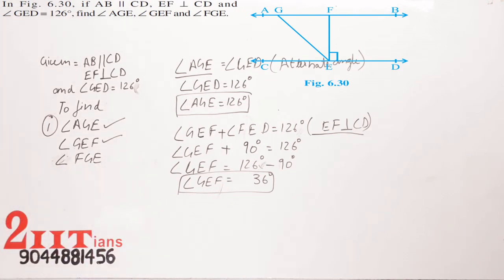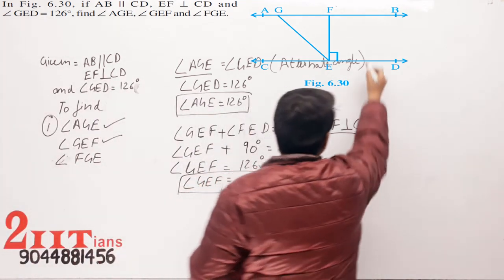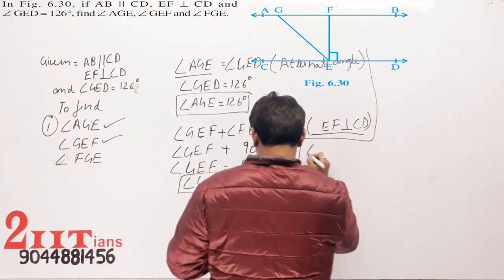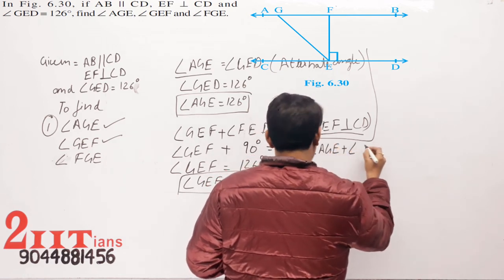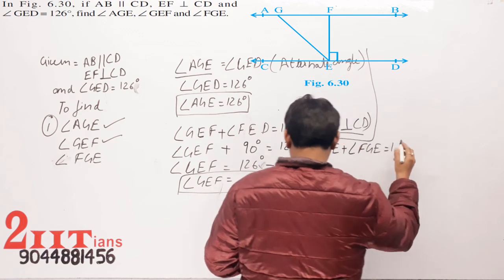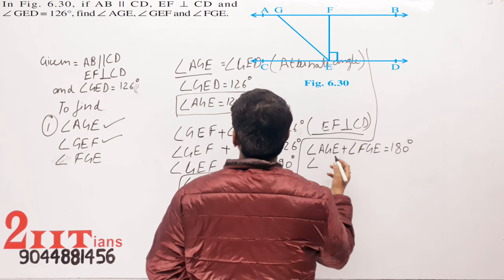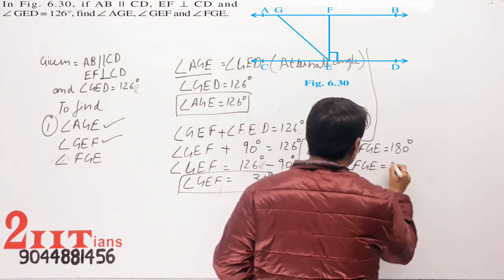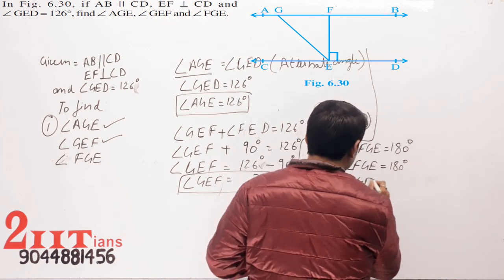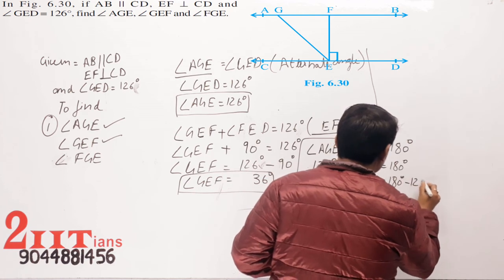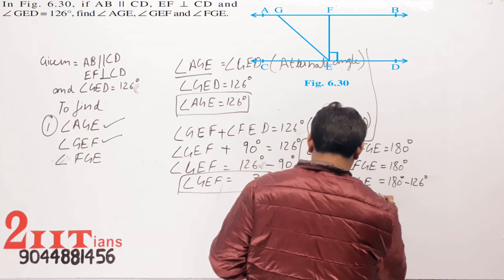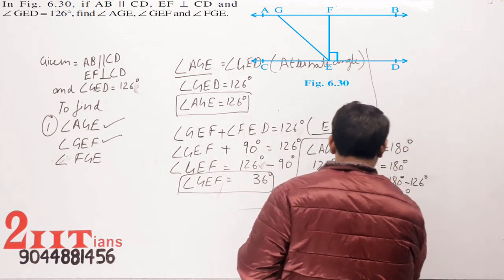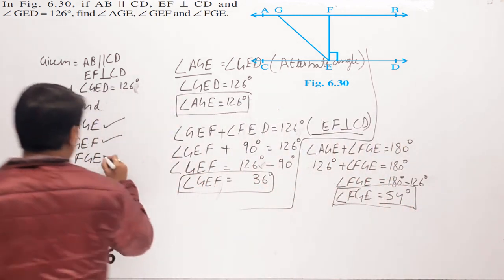Now the last one is angle FGE. Since AGE and GED are equal as alternate angles, angle AGE plus angle FGE equals 180 degrees. Angle AGE is 126 degrees, so angle FGE equals 180 degrees minus 126 degrees, which gives us 54 degrees. So angle FGE is also found.